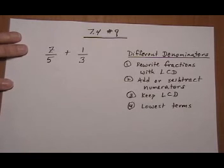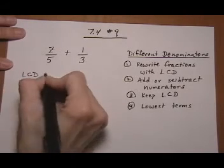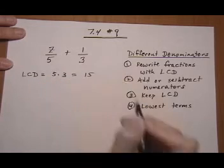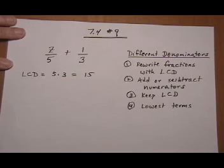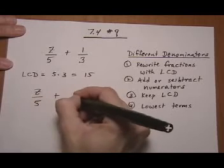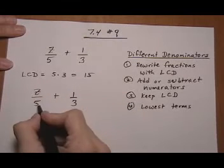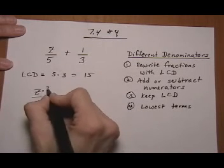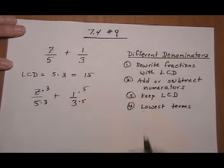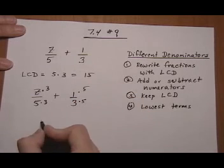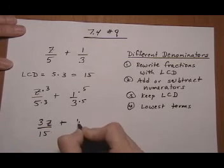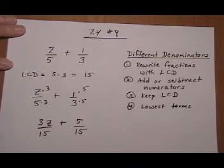So first we've got to think about the LCD. So for this problem, the LCD is going to be five times three or fifteen. So now we want to rewrite, and that gives us, so to turn the five into a fifteen I'd have to multiply by three, do the same to the top, times five over here gives us fifteen, do the same to the top. So we have three z over fifteen plus five over fifteen.